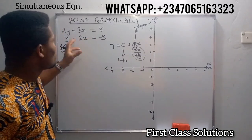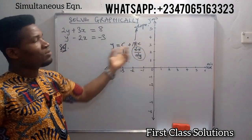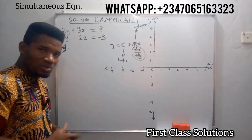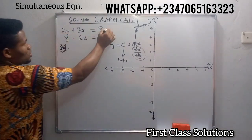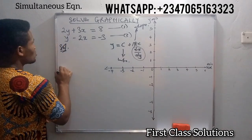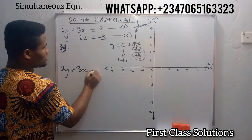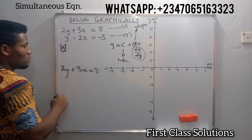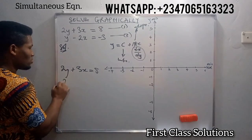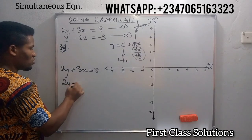We're going to make y the subject of the formula in any of these equations, so as to get the semblance of a function from the solution. From the first equation — let's call this equation 1 and this one equation 2 — we have 2y plus 3x equals to 8. We need to make y the subject of the formula. Taking 3x to the other side, we have 2y equals to 8 minus 3x.